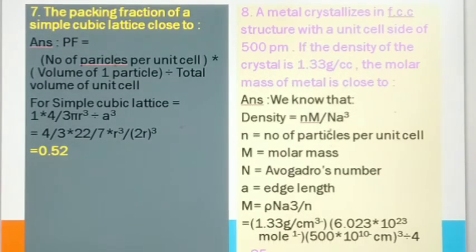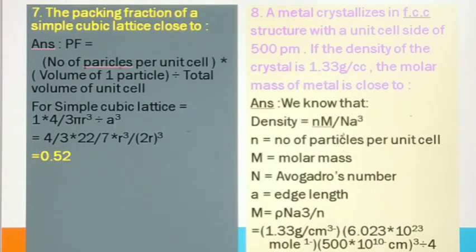They asked about the packing fraction of simple cubic lattice. How to calculate the packing fraction? Here we have a formula: number of particles per unit cell multiplied by the volume of one particle and divided by the total volume of unit cell. For simple cubic lattice, we have number of particles per unit cell equal to 1, because in simple cubic lattice there will be atoms present only at the corners - that is 8, and contribution will be 1/8, so their contribution will be 1. Volume of one particle - here a is unit cell length, so a cube will be there. After calculation, we'll get 0.52 as the answer.